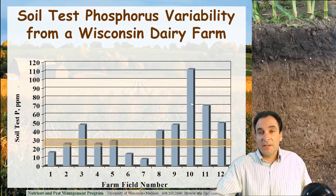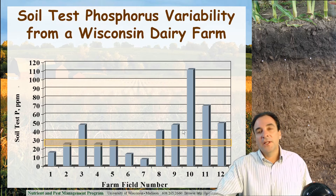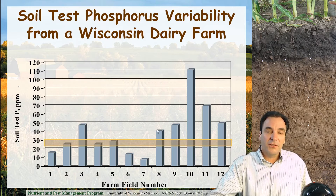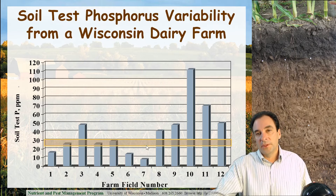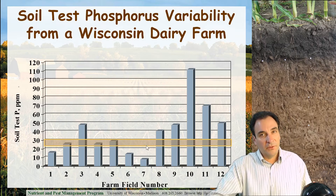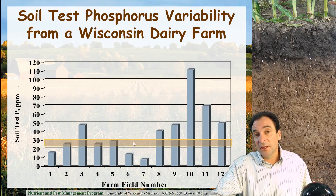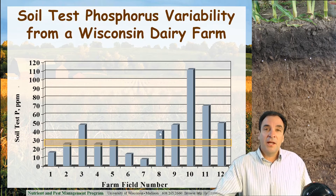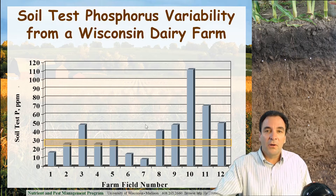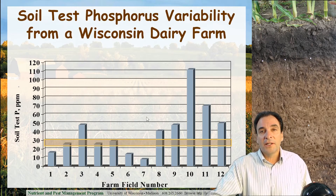We can use this type of data as nutrient management planners or crop consultants to convince the farmer to, if they can efficiently and safely get to other fields, start applying manure to those fields to build levels up. There are often practical limitations on how far you can get to a field, and safety concerns. In this case, a major highway bisects the farm, which explains why some fields are low and aren't manured on a regular basis.